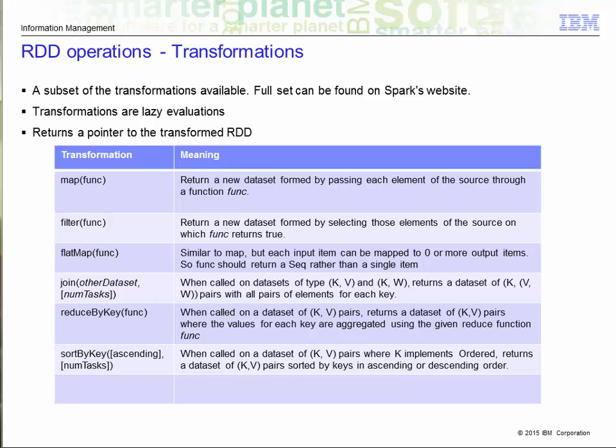Each transformation function basically updates the graph, and when an action is called, the graph is executed. Transformation returns a pointer to the new RDD.